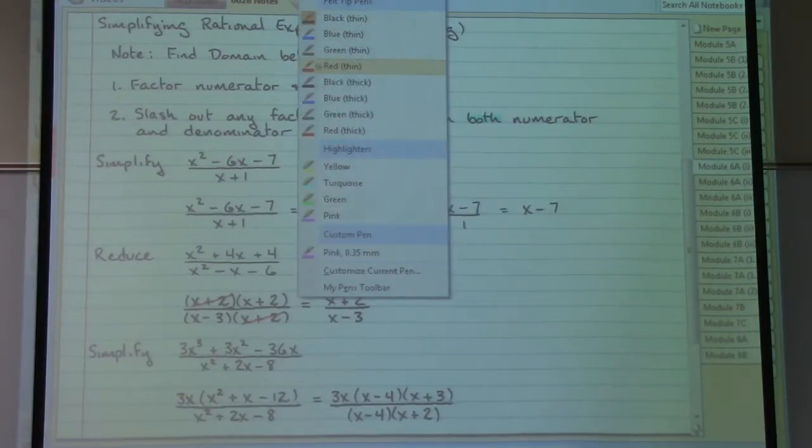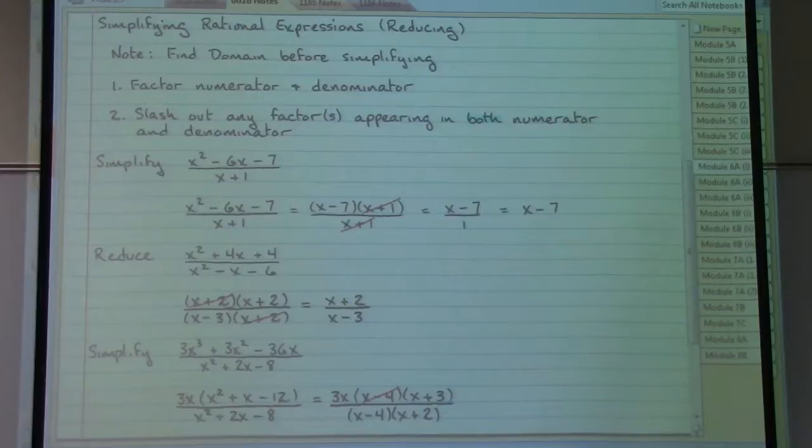And we see that there is a common factor of x minus 4 on both the top and the bottom. So we can slash those out, leaving us with a 3x parentheses, x plus 3 on the top. And on the bottom, we are left with an x plus 2.